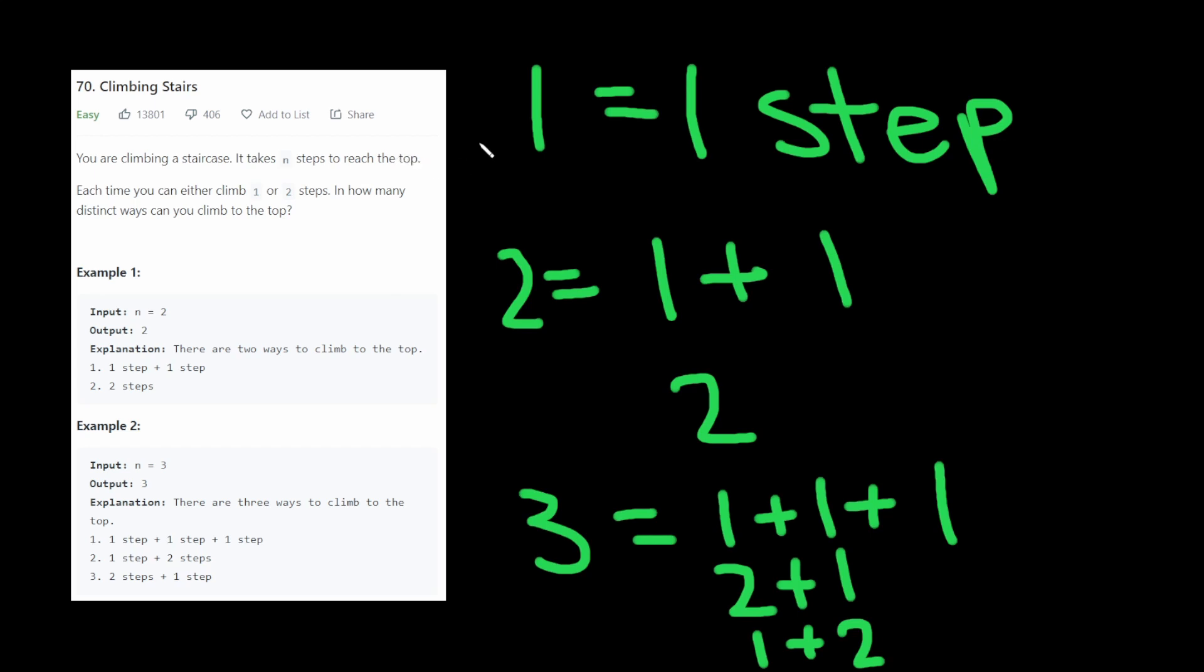In this problem we're climbing stairs and we're given the input of how many steps it takes to reach the top, for example one, two, or three here, and we have to figure out how many distinct ways we can climb to the top. And we can only climb in either one or two steps at a time.